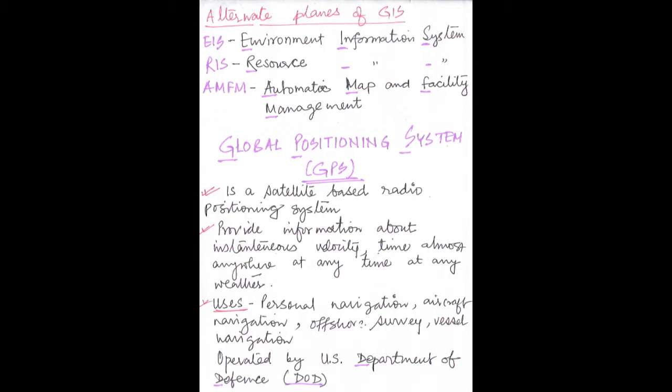Next I will discuss about GPS. GPS stands for Global Positioning System. We all know it nowadays because we use GPS in our mobiles too — sometimes when we have to go to a new area we turn on GPS and reach our destination comfortably. GPS is actually a satellite-based radio positioning system. Here, information is provided about instantaneous velocity — that means the velocity at that very moment.